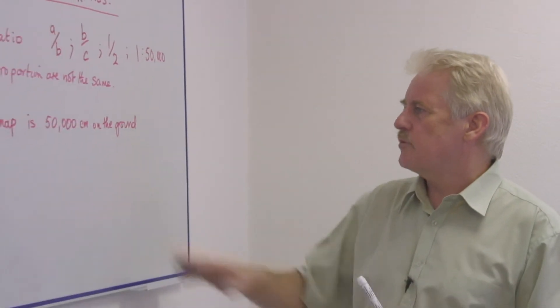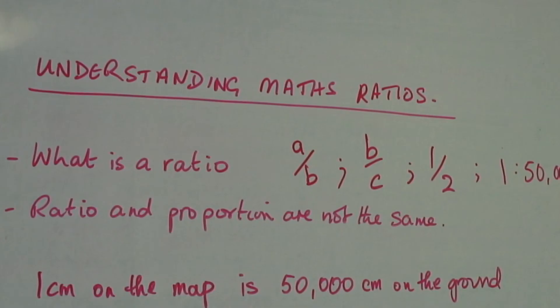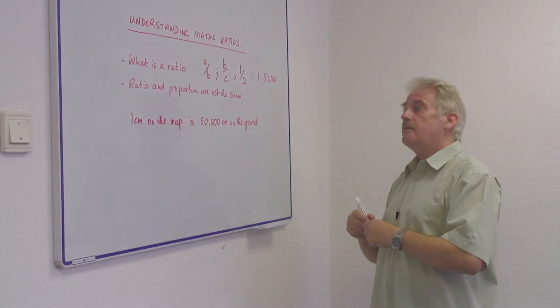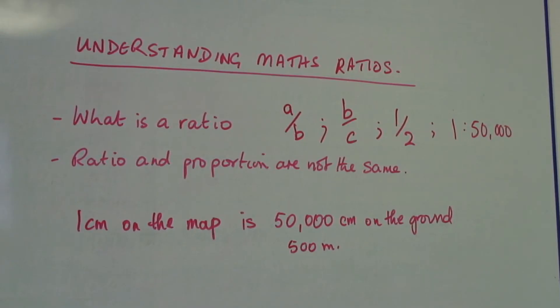And 50,000 centimeters, well, 1,000 centimeters is, how many? It's 10 meters. So that's 50 times 10, it's 500 meters. 500 meters. All right?